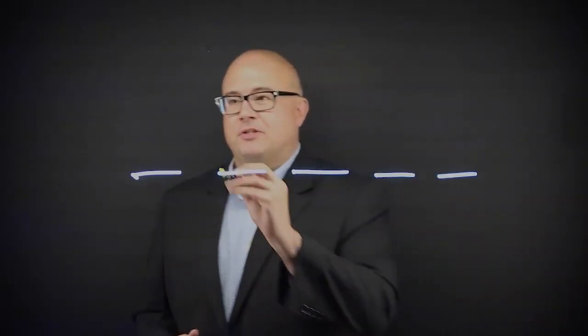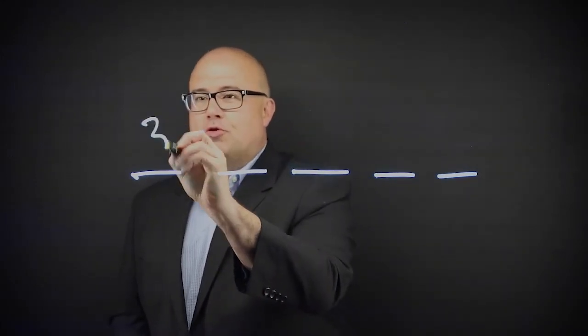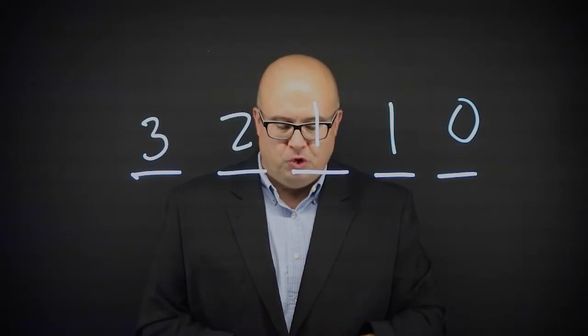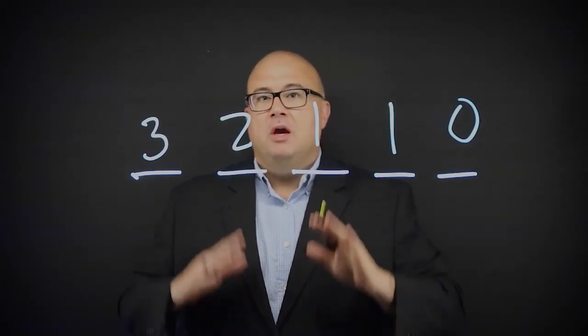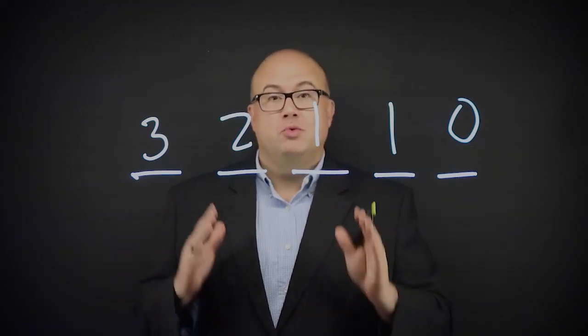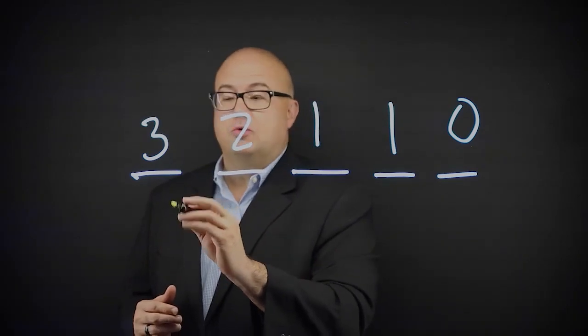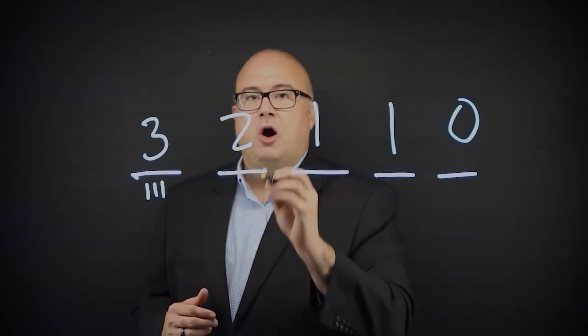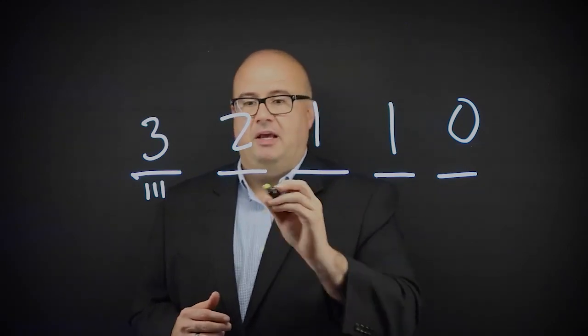Hi, let's talk numbers. I want to introduce you to the 3-2-1-1-0 rule of data management. The 3-2-1-1-0 rule was built on the 3-2-1 rule, which said have three different copies of data on two different types of media.